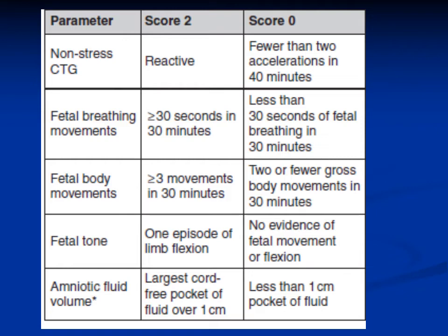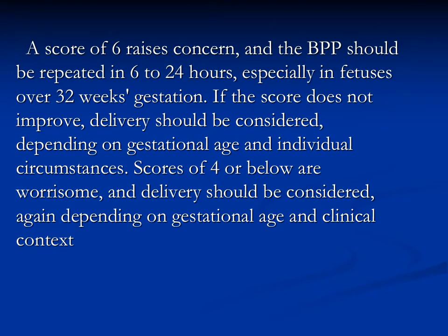Amniotic fluid volume: the largest cord-free pocket must be more than 1 cm to score 2; less than 1 cm scores 0. A total score of 6 raises concern and the biophysical profile should be repeated in 6 to 24 hours, especially in fetuses over 32 weeks. If the score does not improve, delivery should be considered. A score of 4 or below is worrisome and delivery should be considered depending on gestational age. A score of 8–10 is normal; 6 and below is possibly abnormal.